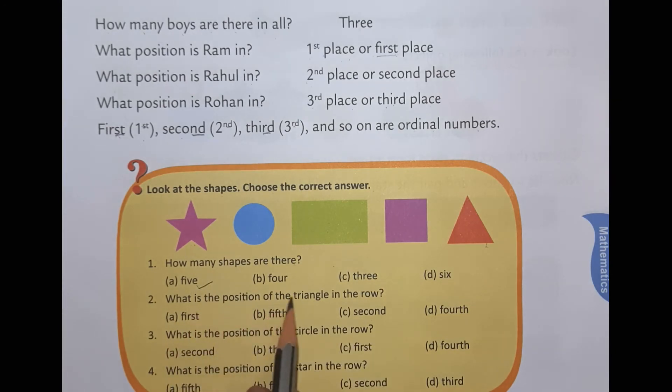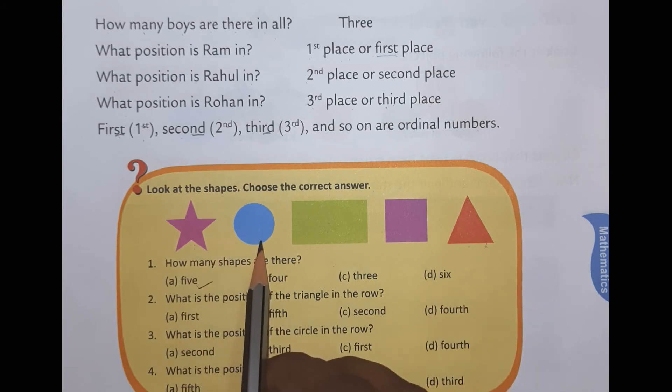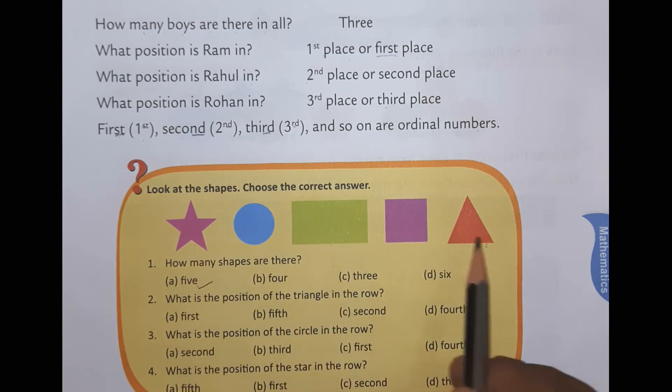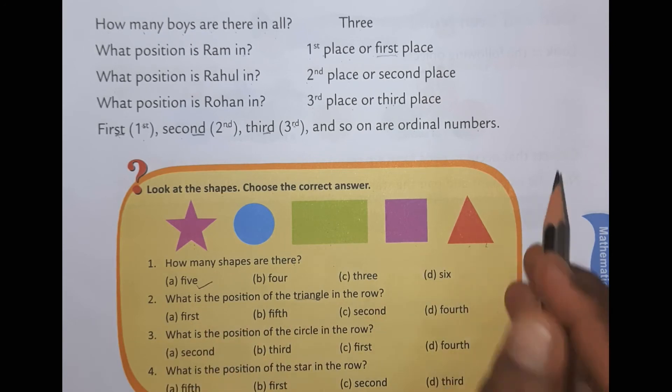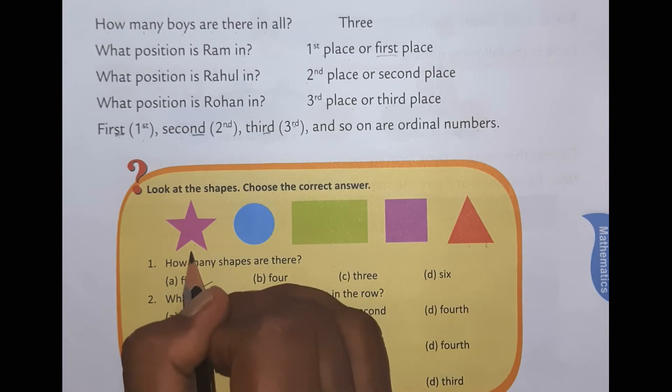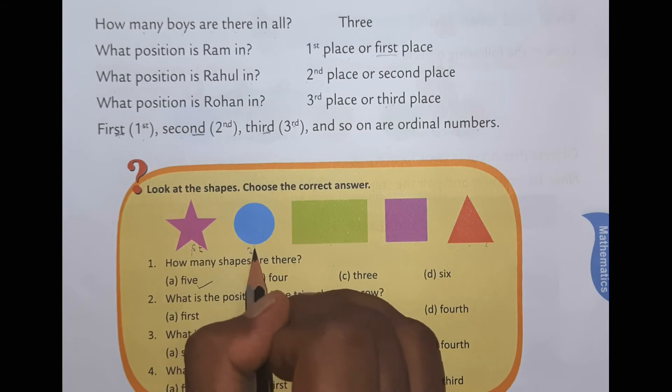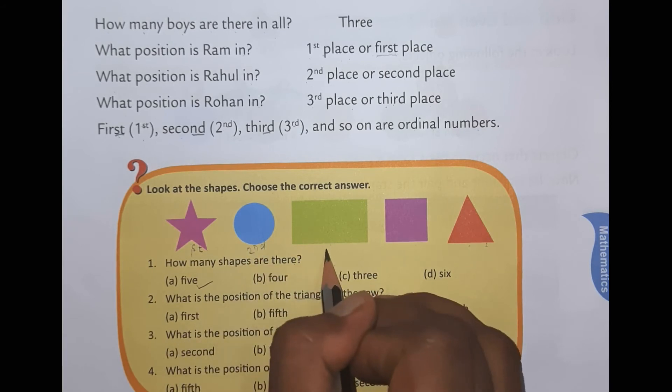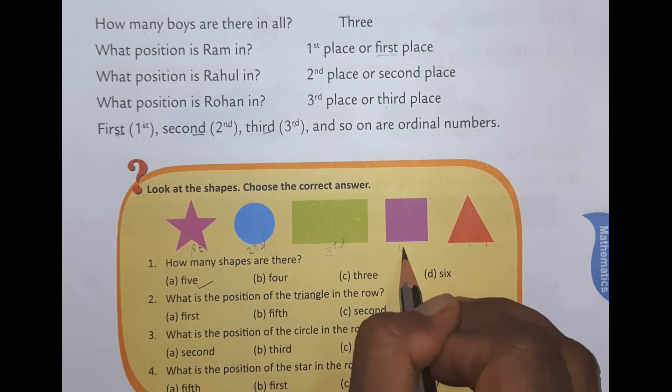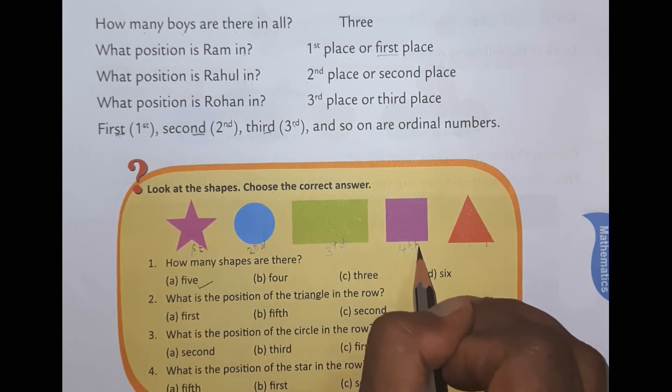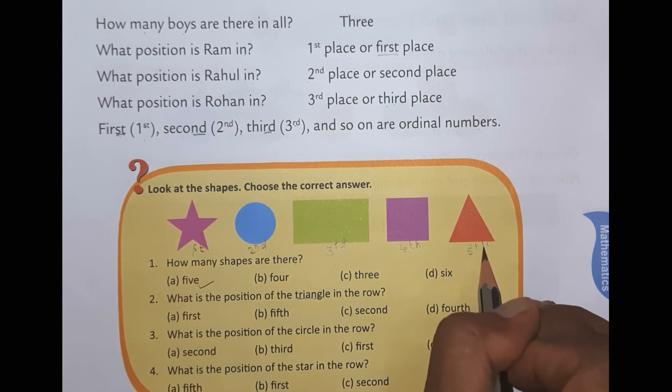What is the position of triangle in the row? Triangle. Where is triangle? So first, second, third, fourth, fifth. So what is the position of triangle? First, second, third, fourth, fifth.